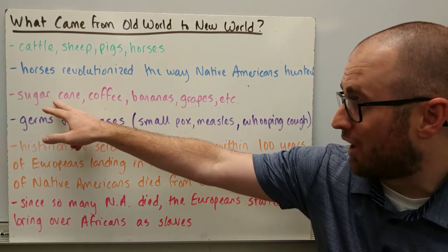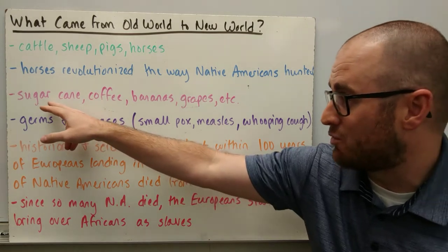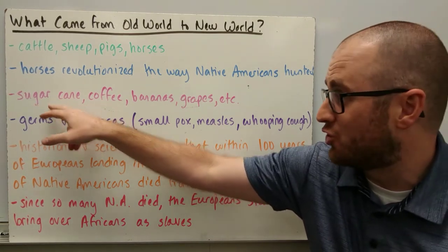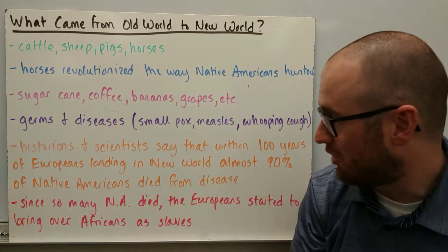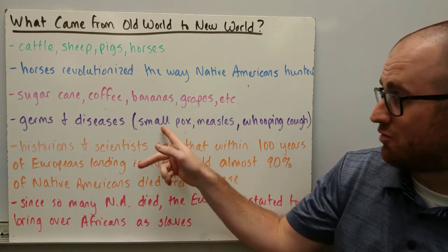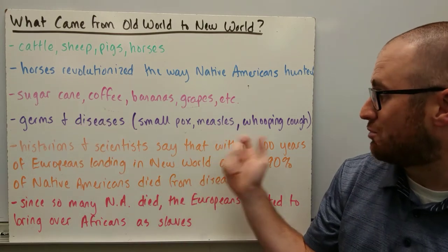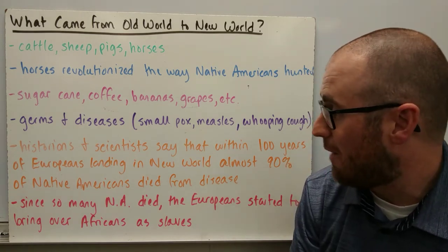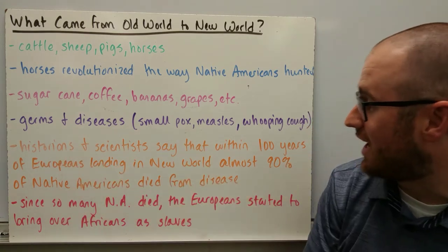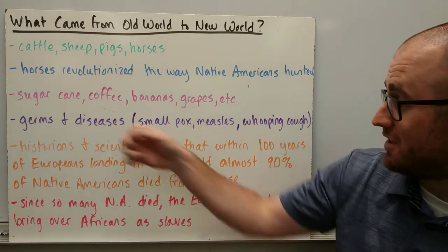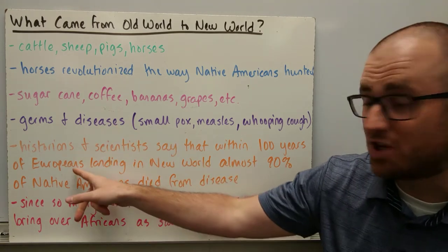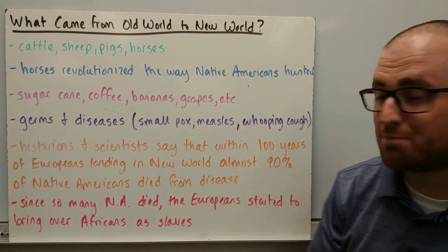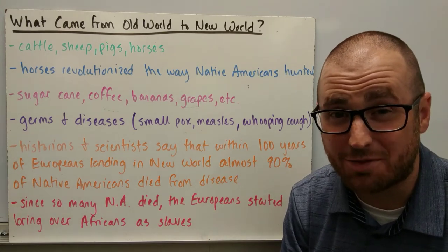You also got sugar cane, which was planted — the environment was great for growing sugar in the new world. Coffee, bananas, grapes, etc. Germs and diseases were huge. We've talked about smallpox, also measles and whooping cough — a lot of people get vaccines for those nowadays. A lot of historians and scientists say that within the first hundred years of Europeans landing in the new world, almost 90% of Native Americans died from disease.